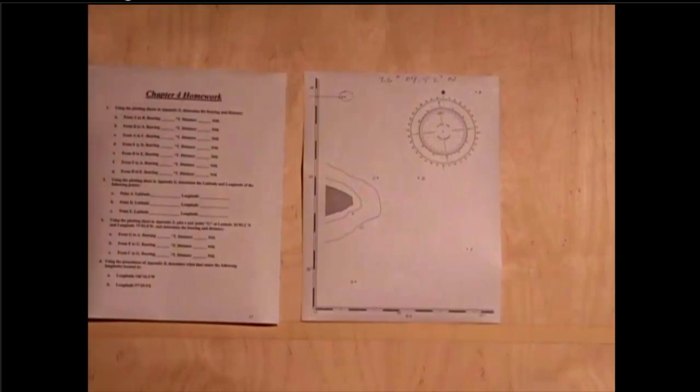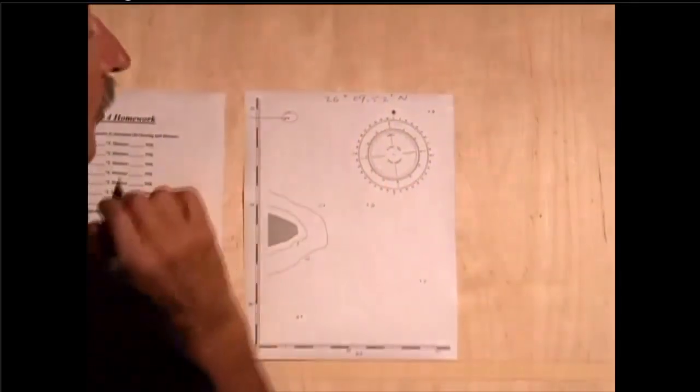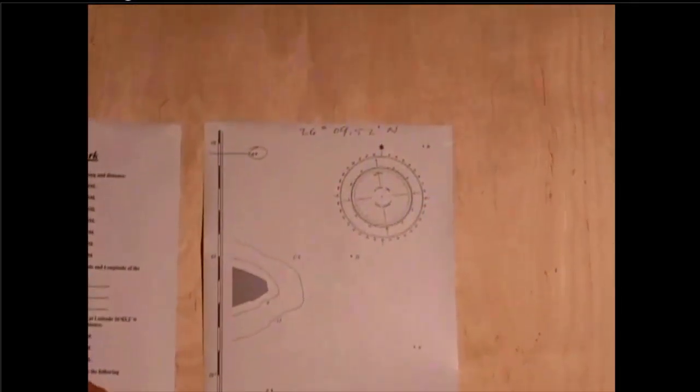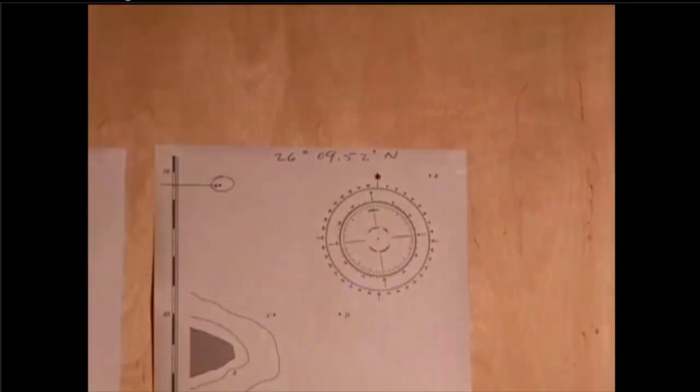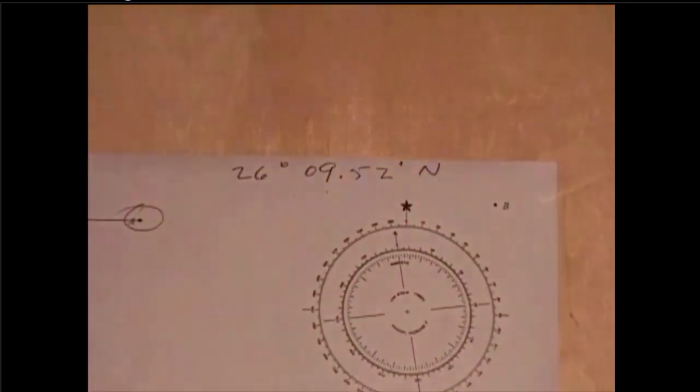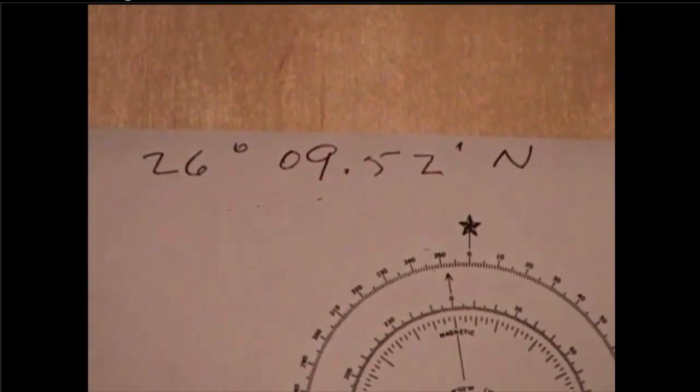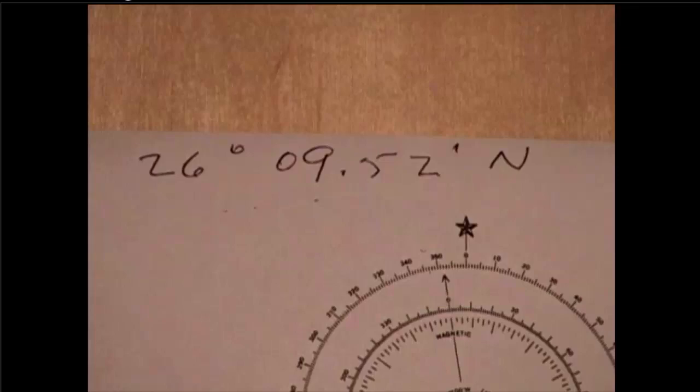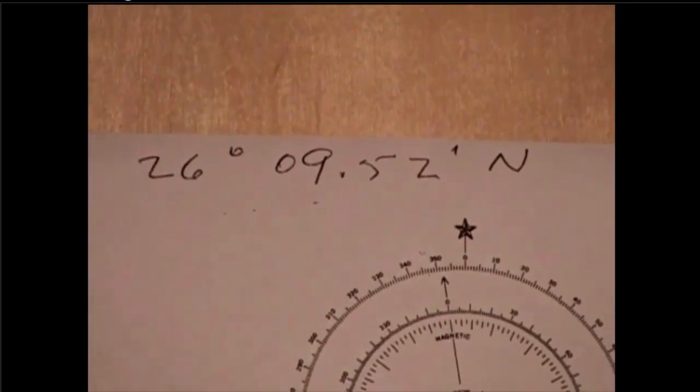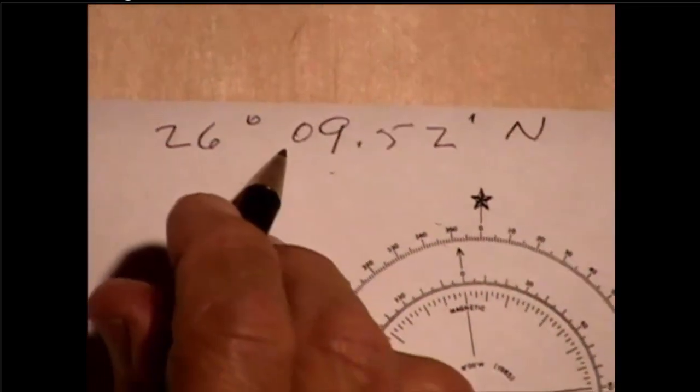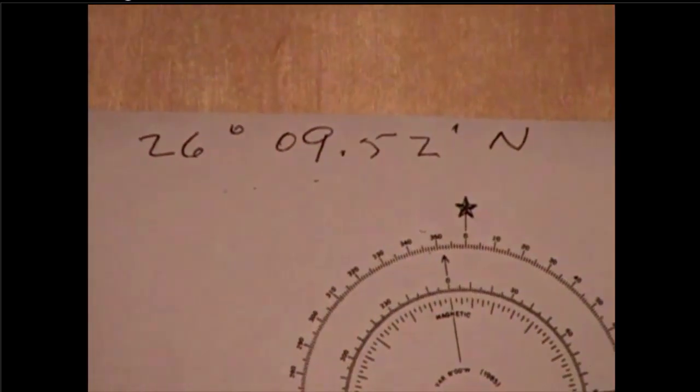Now, notice when this is written, 26 degrees, a little tiny degree circle up there, 09. A lot of times people will forget the 0, and then later on when they're maybe adding some numbers or doing some work with those numbers, they get fouled up because they don't use that leading zero here. You should always use two digits.